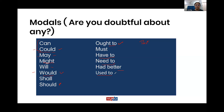Used to is used to talk about past habits, not present. 'I used to read a lot of books. I used to play the piano' — you're talking about past habit, not present. Used to can also refer to past facts: 'The city I live in used to be a smaller place earlier.' So we can use it to talk about the past.